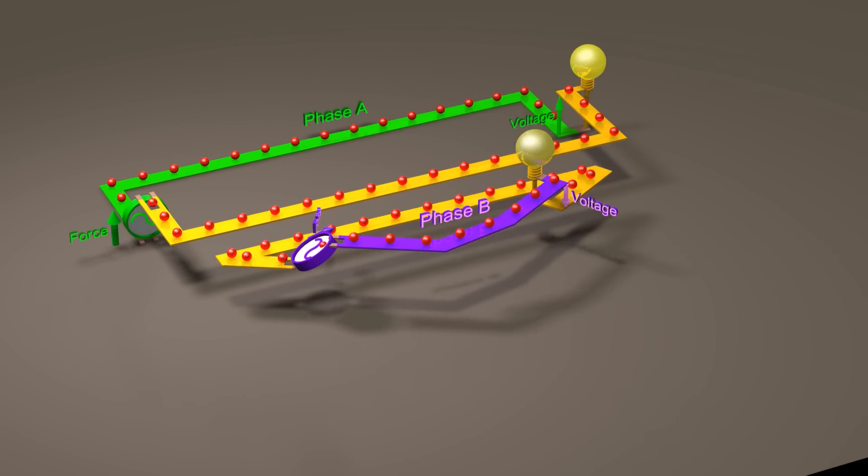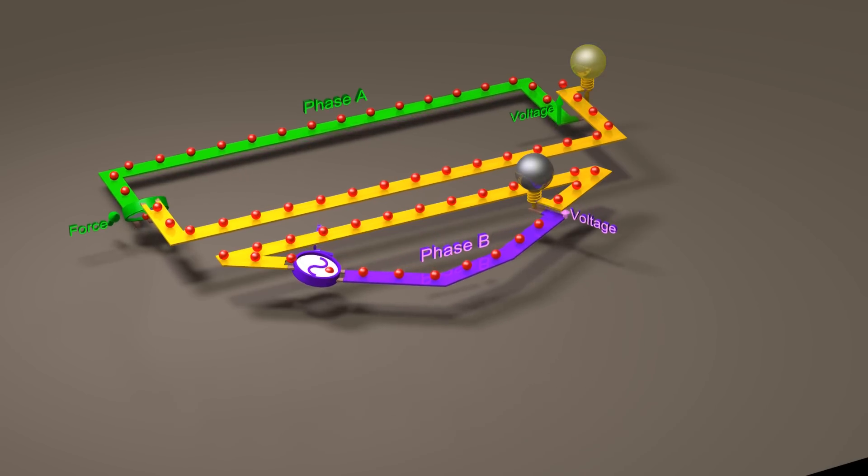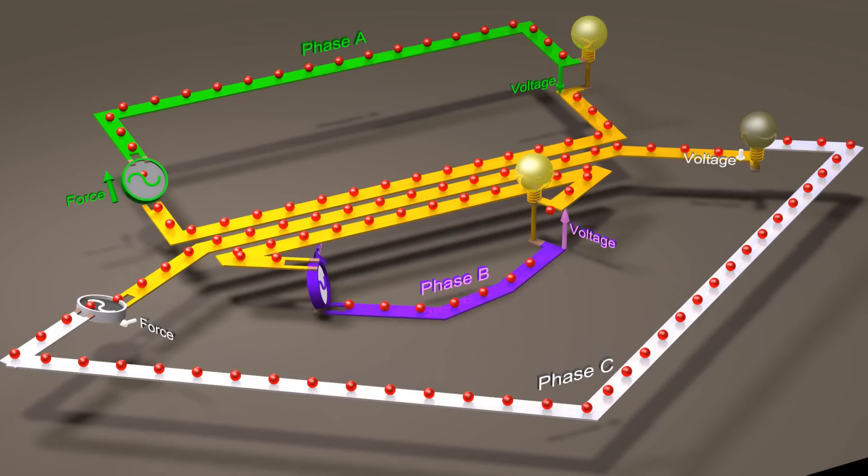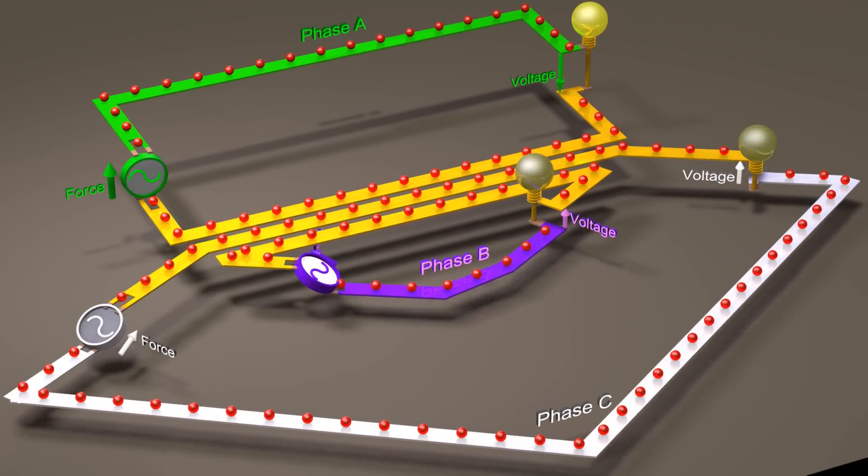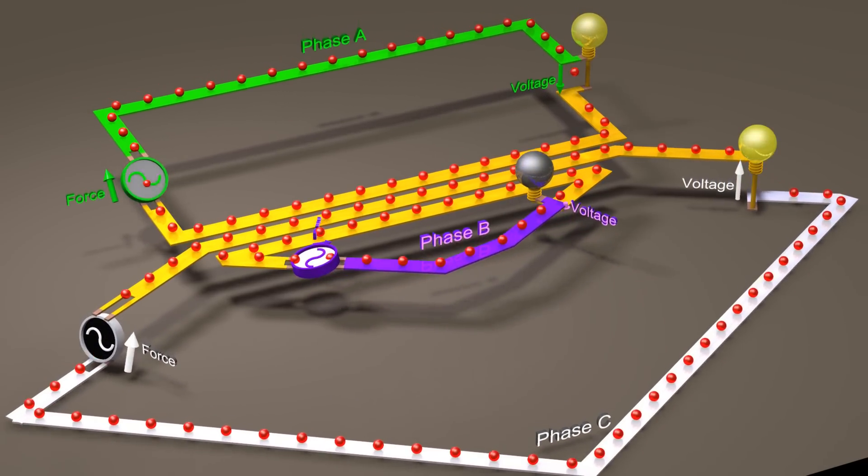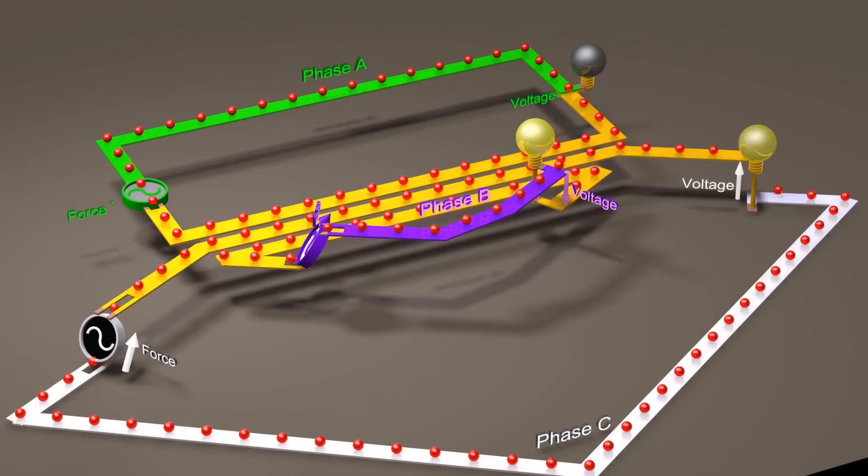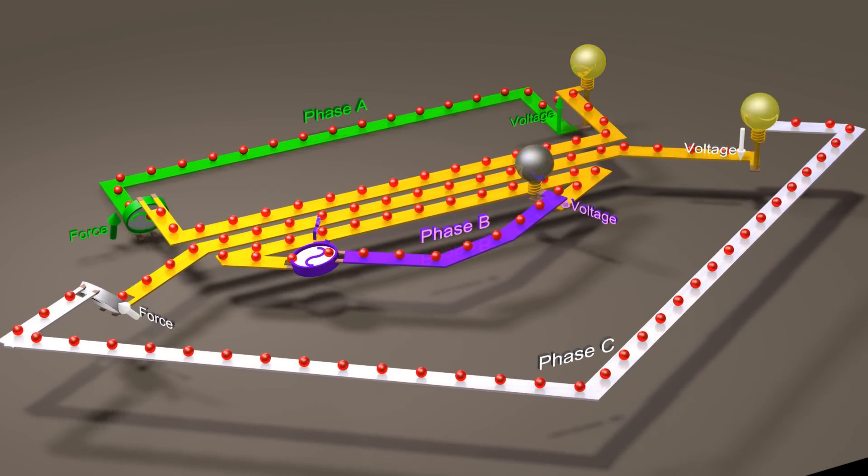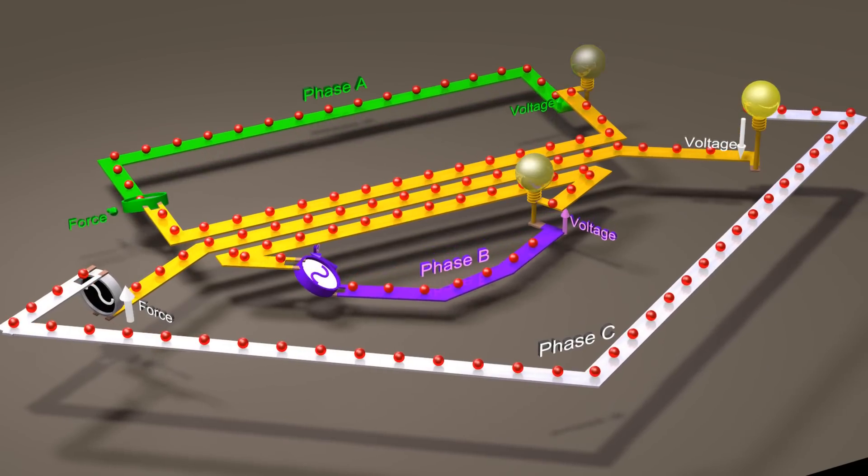The phasor diagram describes the voltage of each of the three wires. Phasor diagrams can also describe the current through each of the three wires.